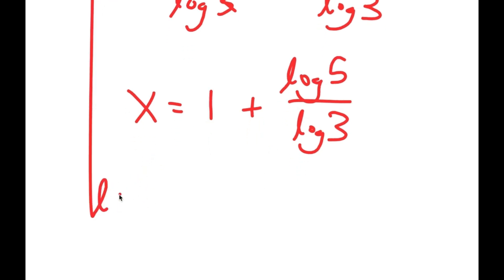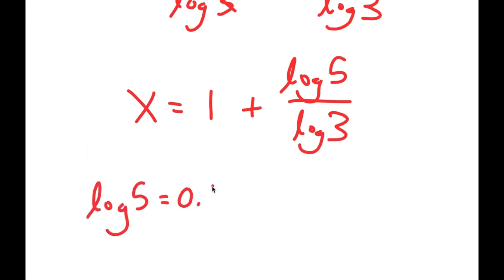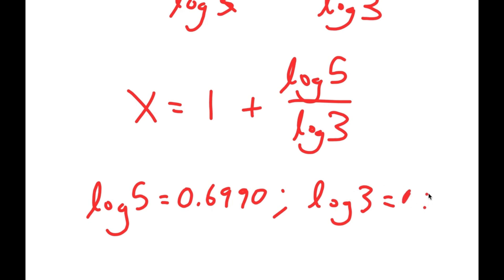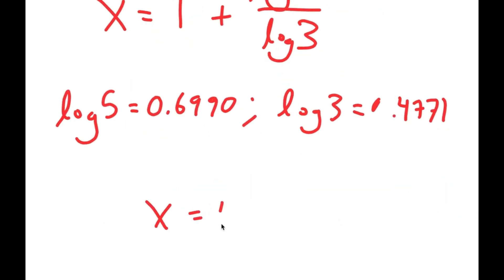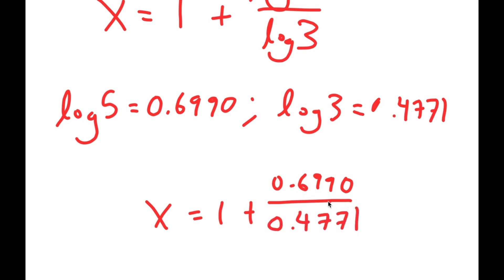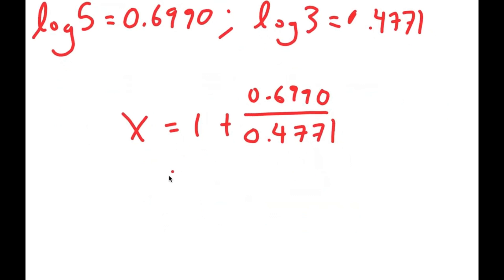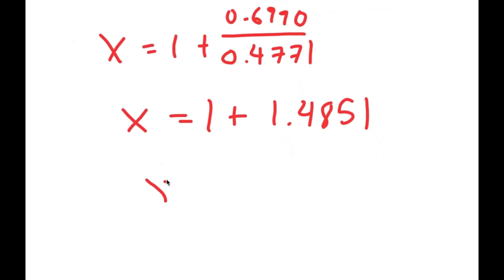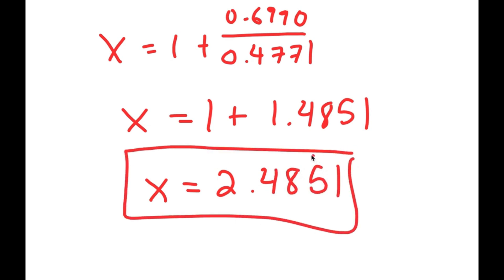Log 5 equals 0.6990 and log 3 equals 0.4771. So x equals 1 plus 0.6990 over 0.4771. Since 0.6990 divided by 0.4771 equals approximately 1.4851, I get x equals 1 plus 1.4851, which equals approximately 2.4851. That's my answer. Make sure to subscribe and leave a like. Thank you, bye.